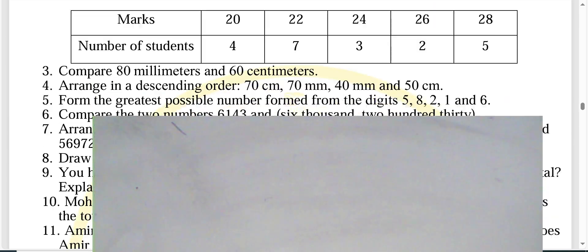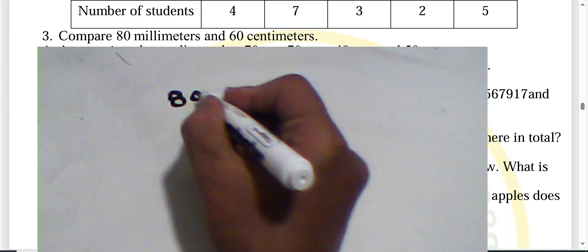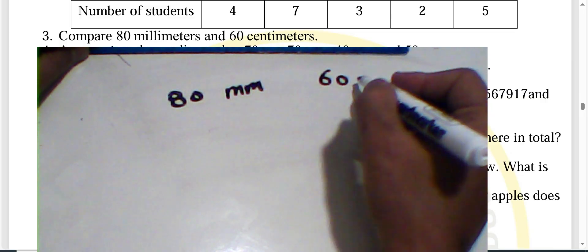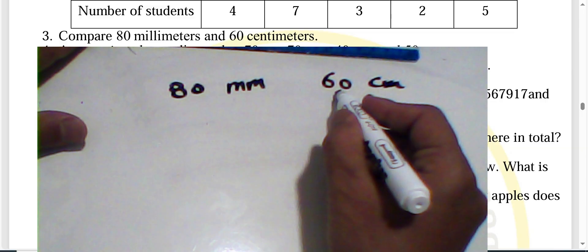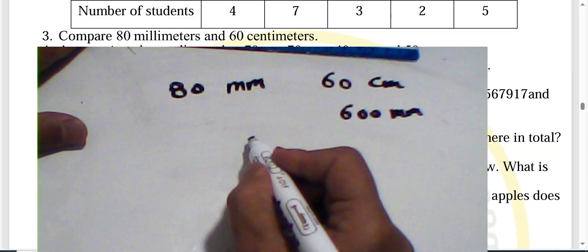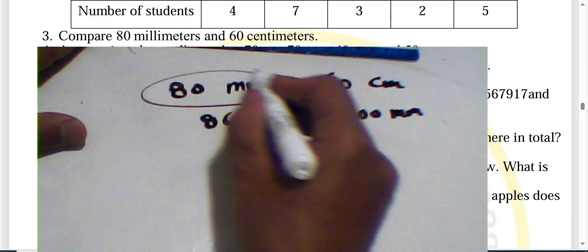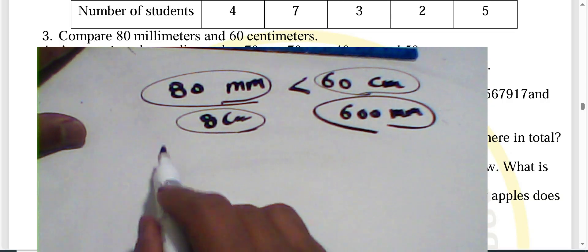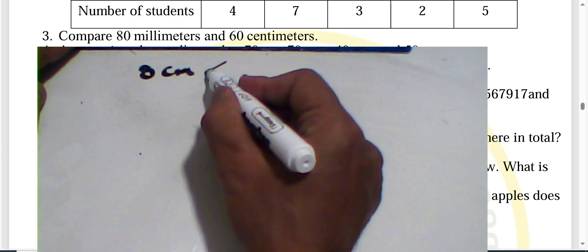Question three: compare 80 millimeters and 60 centimeters. We know 60 centimeters equals 600 millimeters, and 80 millimeters equals 8 centimeters. Since 8 centimeters is less than 60 centimeters, 80 millimeters is less than 60 centimeters.